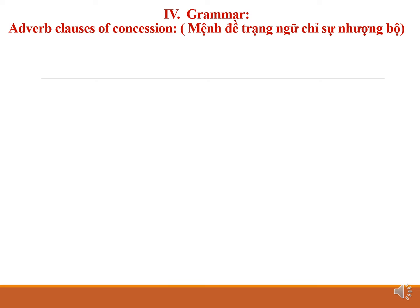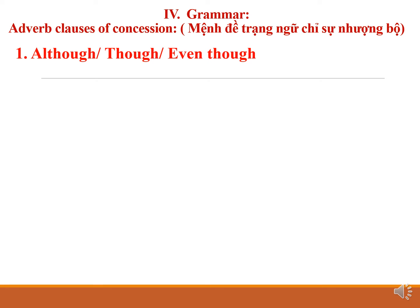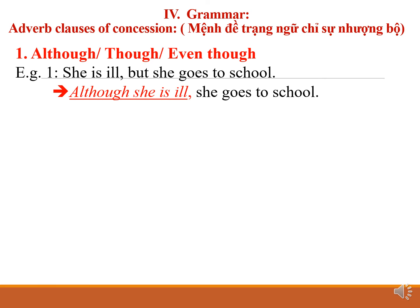The next part of the lesson is grammar — adverbial clauses of concession using although, though, and even though. For example: 'She is ill, but she goes to school' becomes 'Although she is ill, she goes to school.' Now another example using though: 'It is raining, but we go on a picnic' becomes 'Though it is raining, we go on a picnic.'